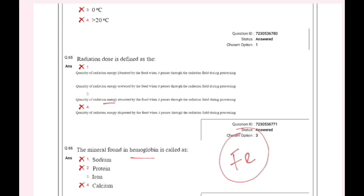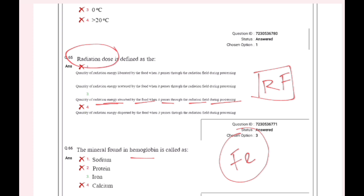Radiation dose: the quantity of radiation energy absorbed by the food when it passes through the radiation field during the process. When the food is absorbed by the food in the radiation field, it is called radiation dose.